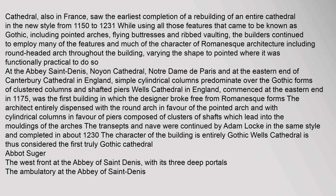At the Abbey St Denis, Noyon Cathedral, Notre Dame de Paris and at the eastern end of Canterbury Cathedral in England, simple cylindrical columns predominate over the Gothic forms of clustered columns and shafted piers. Wells Cathedral in England, commenced at the eastern end in 1175, was the first building in which the designer broke free from Romanesque forms. The architect entirely dispensed with the round arch in favour of the pointed arch, and with cylindrical columns in favour of piers composed of clusters of shafts. The transepts and nave were completed in about 1230, making Wells Cathedral the first truly Gothic Cathedral.